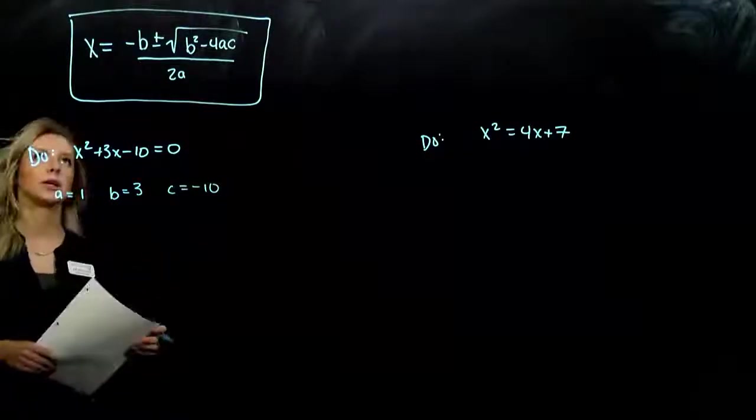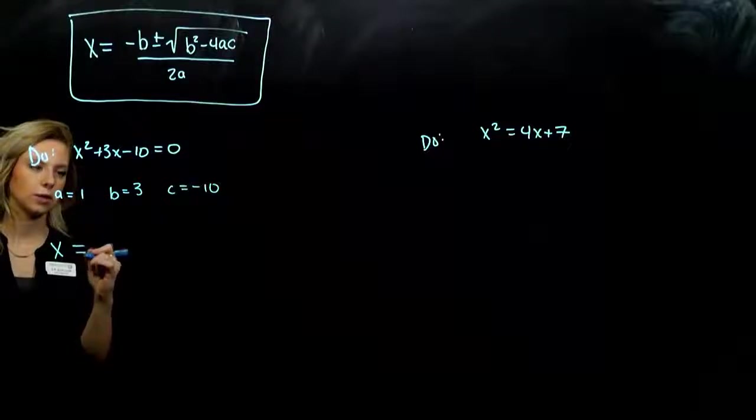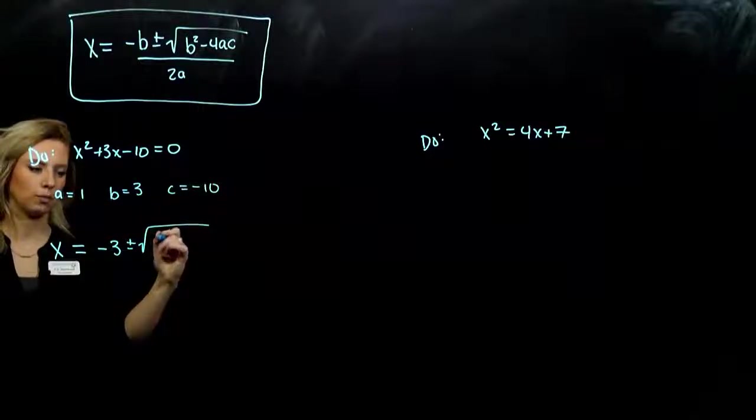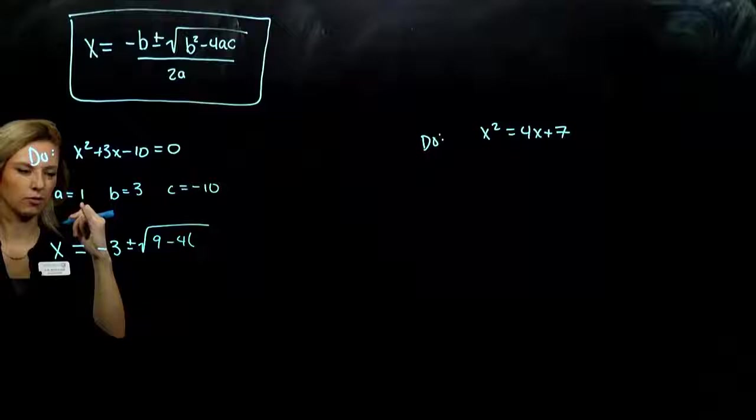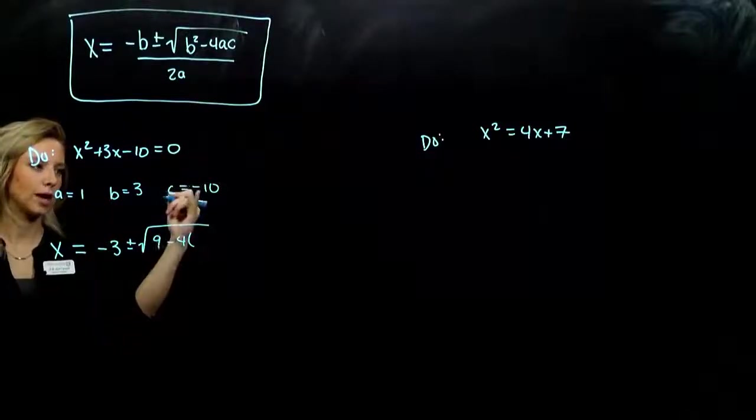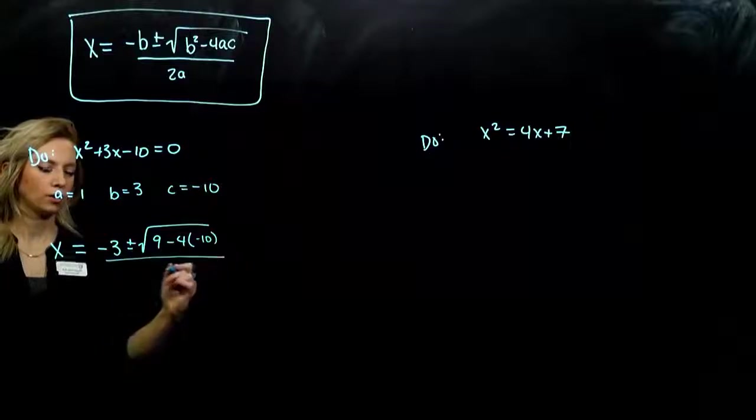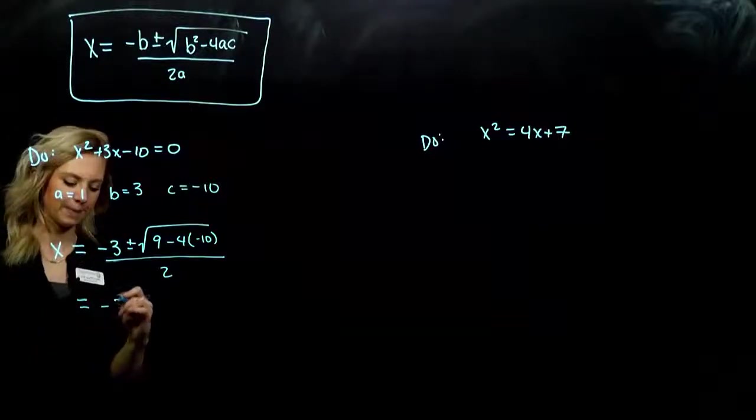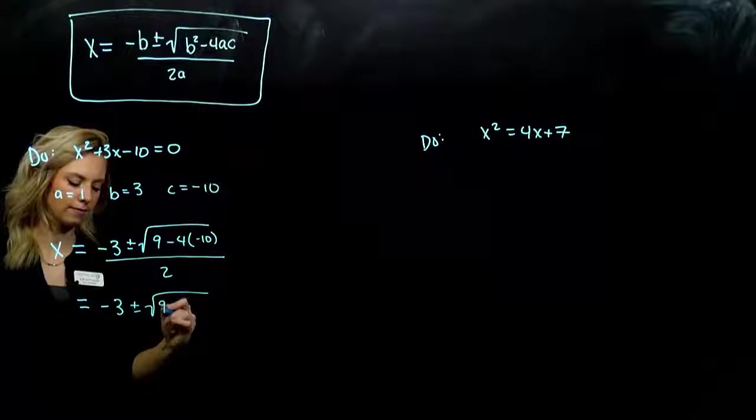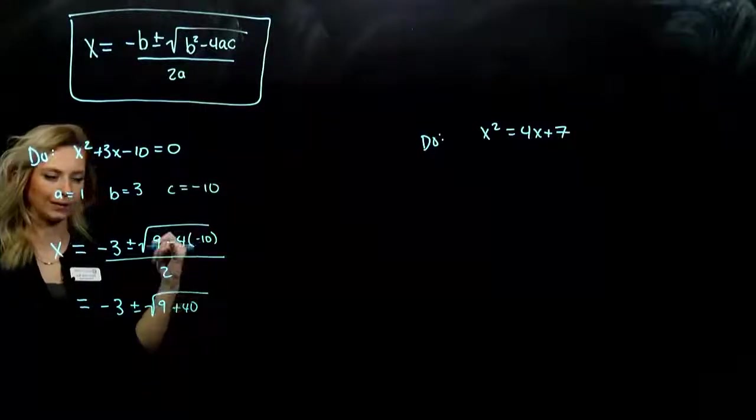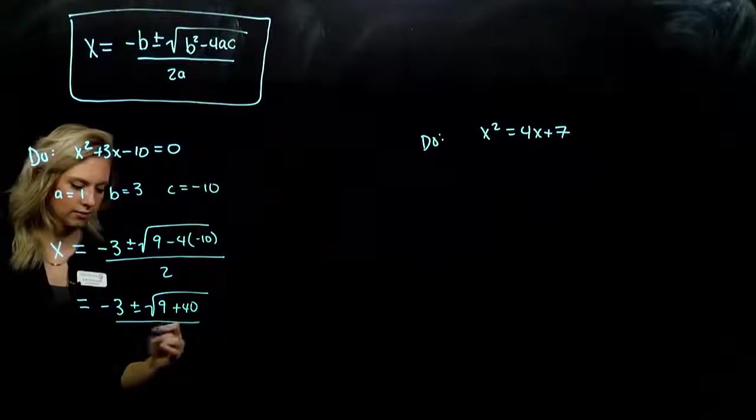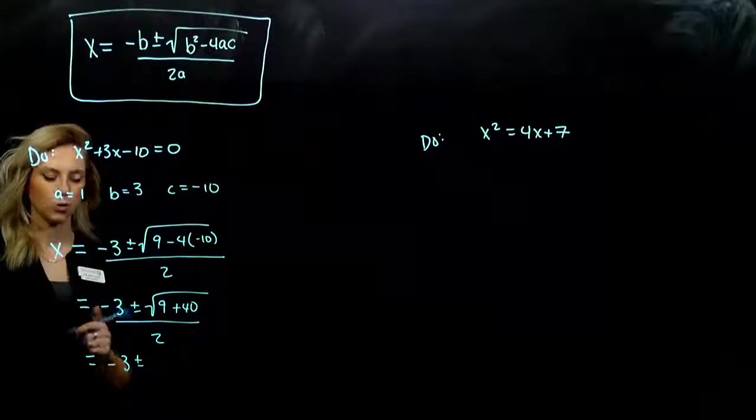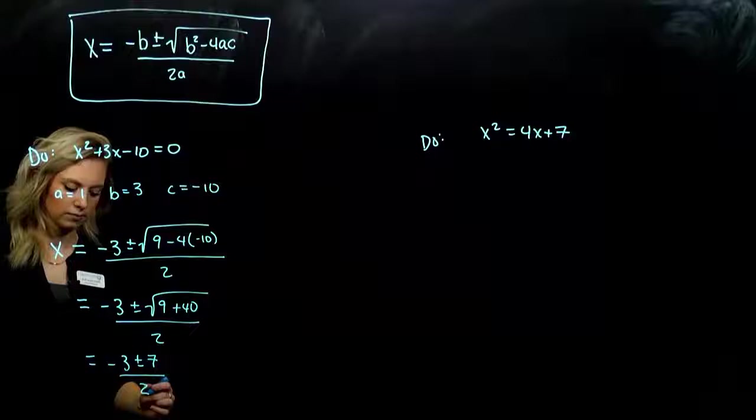We can pluck off those values. Let's plug them in and see what results out. So x equals negative b plus or minus b squared will give me 9 minus 4 times 1 times c, negative 10, all over 2 times a. We can simplify as we go. So what do we get now? Well, negative 3 plus or minus square root of 9 plus 40, because a negative times a negative gives us a positive. That's all over 2.